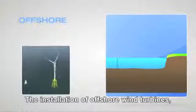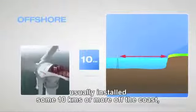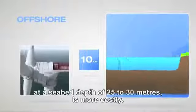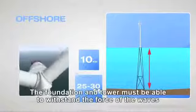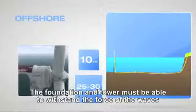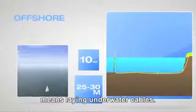The installation of offshore wind turbines, usually installed some 10 kilometers or more off the coast at a seabed depth of 25 to 30 meters, is more costly. The foundation and tower must be able to withstand the force of the waves, and connection to the electrical grid means laying underwater cables.